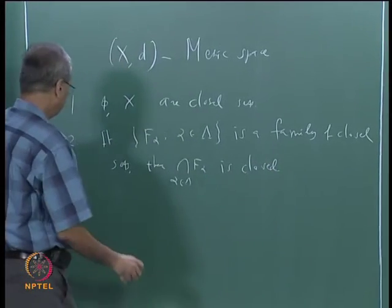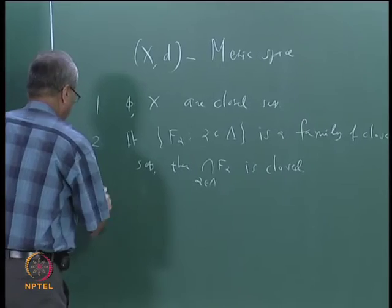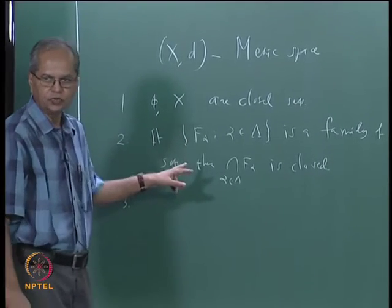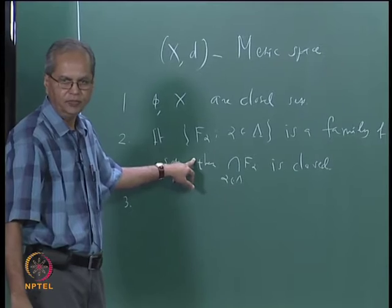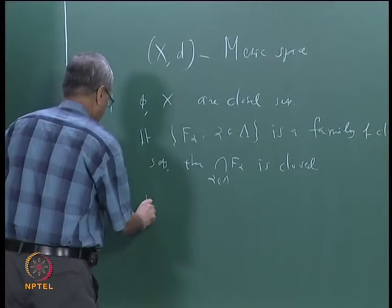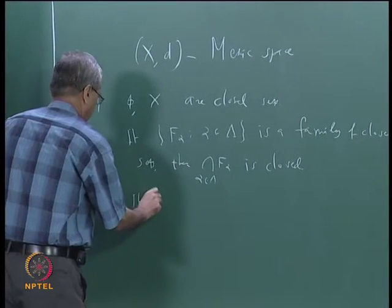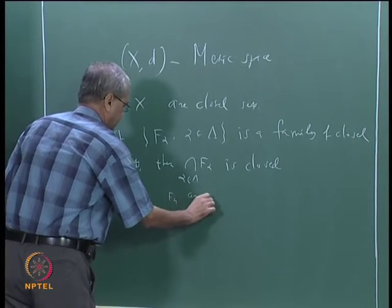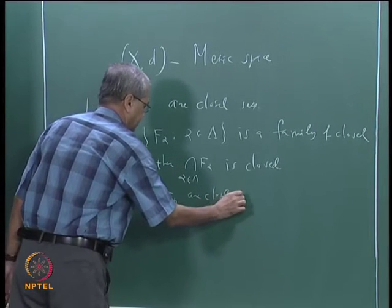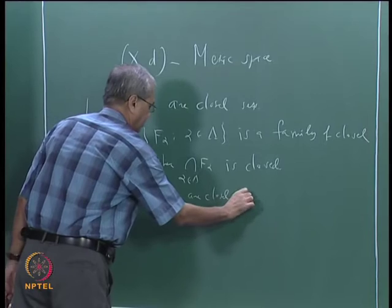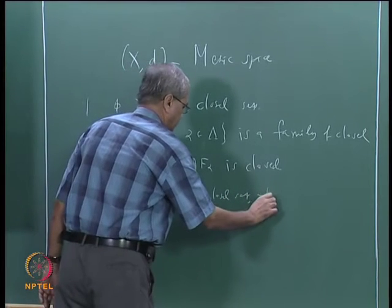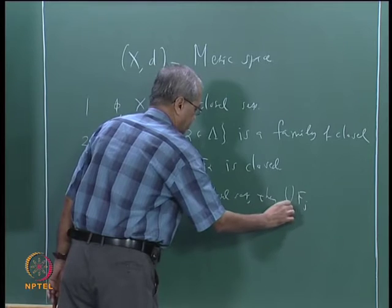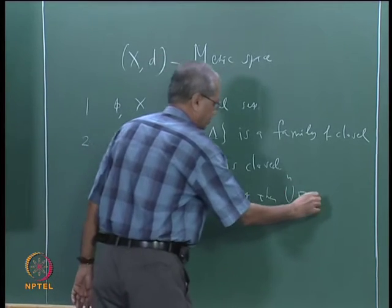This is not true of unions — in the case of unions you have to take only a finite family. So if F1, F2, ..., Fn are closed sets, then the union of Fj for j going from 1 to n is also closed.